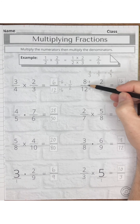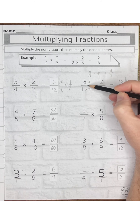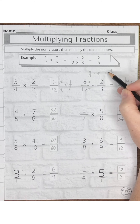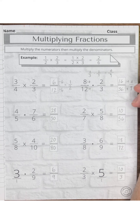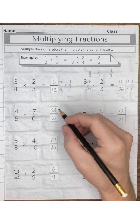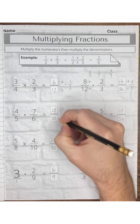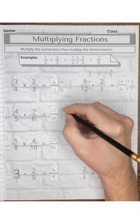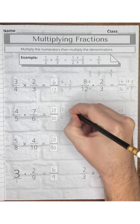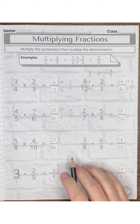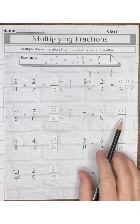Reducing fractions first can be easier because you will not get bigger numbers in your product, making it easier to simplify at the end. Then we have 28 thirtieths — if we divide these by 2, the greatest common factor, we get fourteen-fifteenths. Now we have ten fifty-sixths.